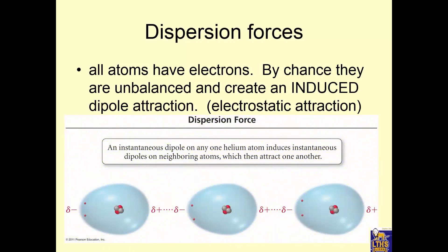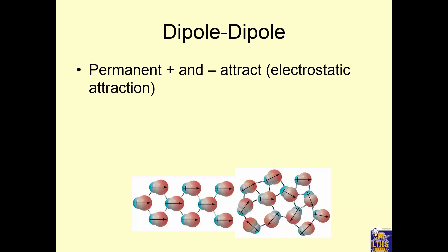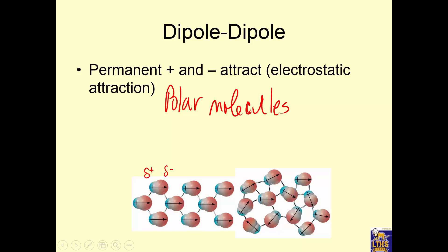Here's dispersion. All atoms have electrons. If at one moment those electrons are unevenly distributed, then an atom next door could get forced to have a dipole, and then the atom next door could also get forced to have a dipole. This happens with molecules as well. It's the weakest kind of intermolecular force, but once you have more atoms, it gets stronger. A dipole-dipole force is a permanent positive and negative attraction because of the polarity of polar molecules. It's stronger than dispersion because every one of these molecules always has that permanent polarity.